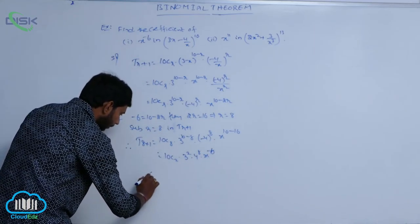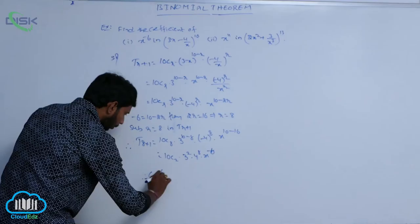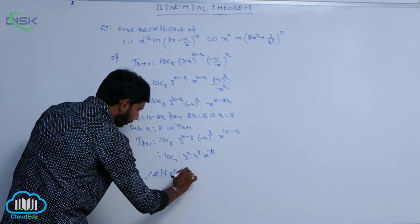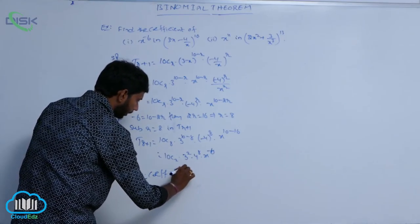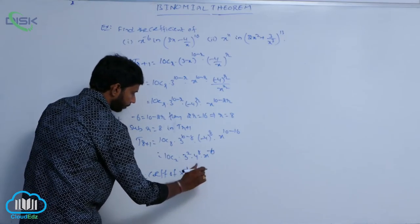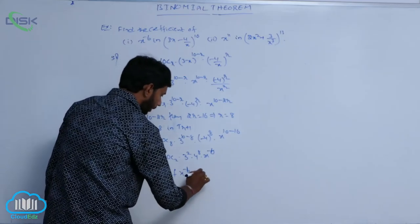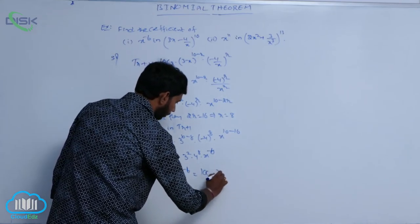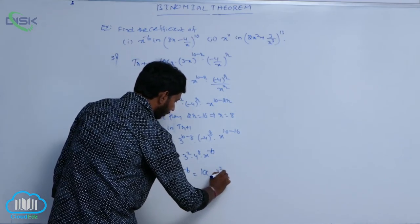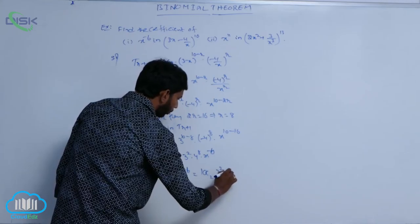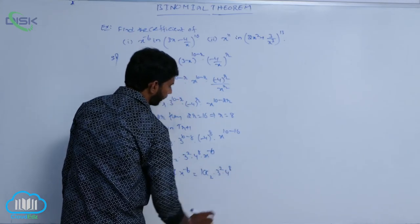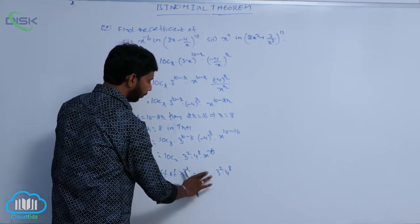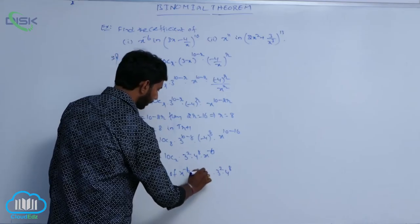Therefore, coefficient of x power minus 6 is equal to 10C2 into 3 squared into 4 power 8.